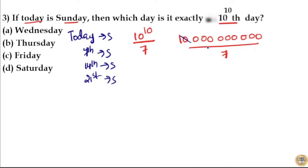Now 10 by 7 gives you remainder 3, 30 by 7 gives you remainder 2, 20 by 7 gives you remainder 6, 60 by 7 gives you remainder 4, 40 by 7 gives you remainder 5, 50 by 7 gives you remainder 1. Again, 10 by 7 gives you remainder 3, 30 by 7 gives you remainder 2, 20 by 7 again gives you remainder 6. That is 60 by 7 gives you remainder 4. So here remainder is 4.